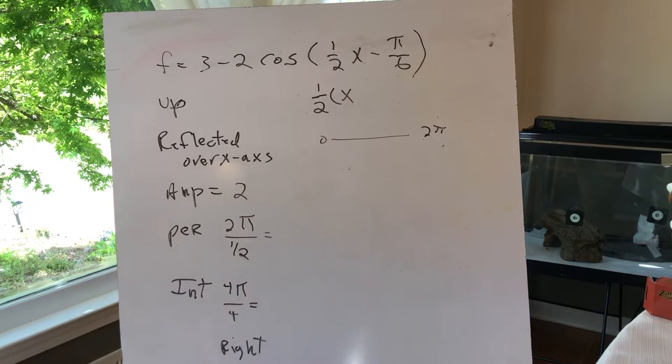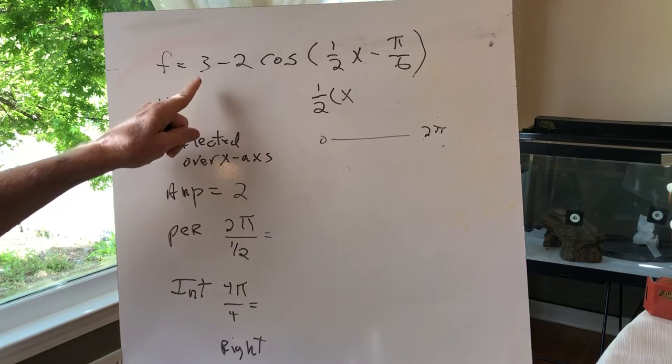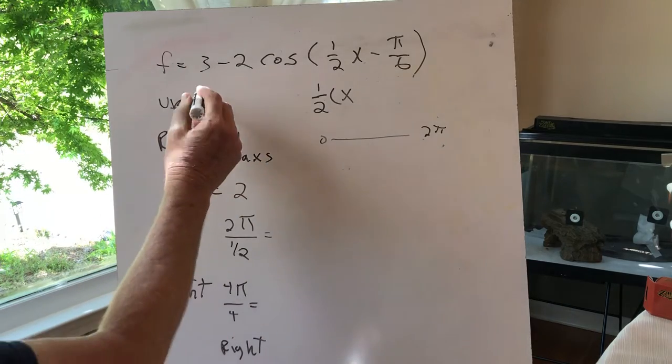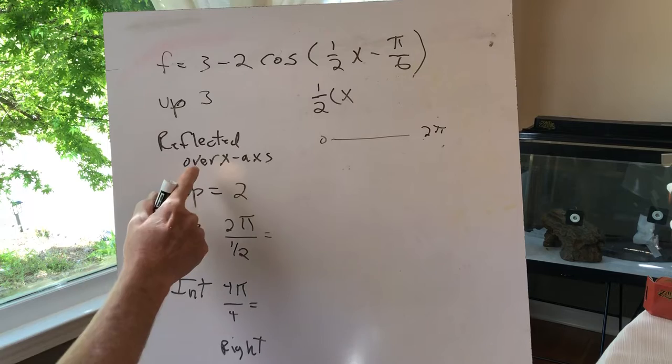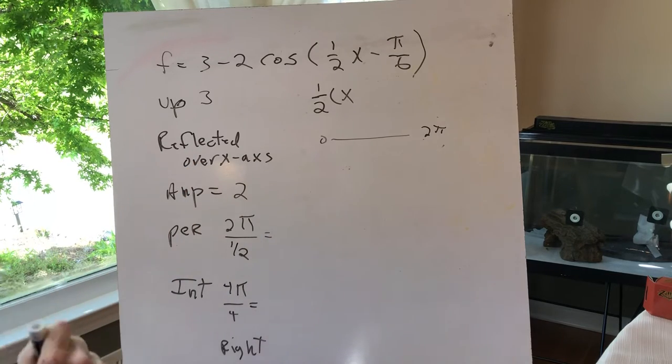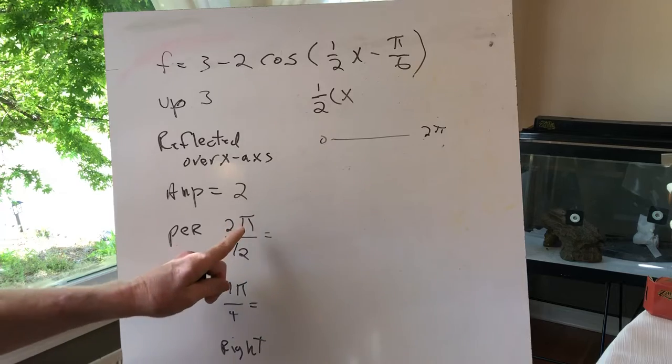So amplitude is 2, shifted up 3, reflected over the x-axis. Now let's get the period. It's normally 2π, but we have to divide by the coefficient of x, which is 1/2, and we get 4π.